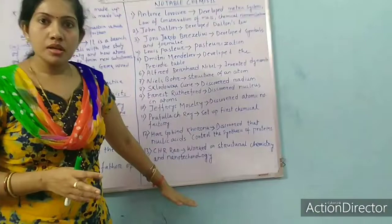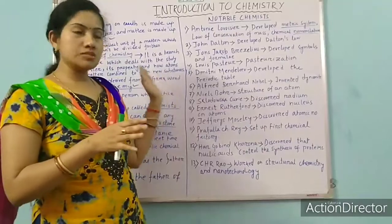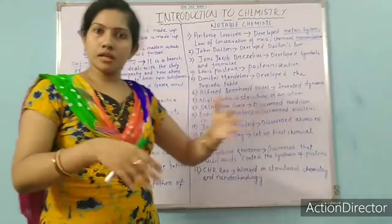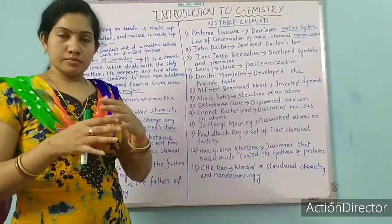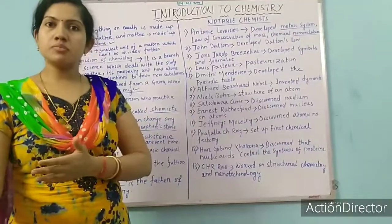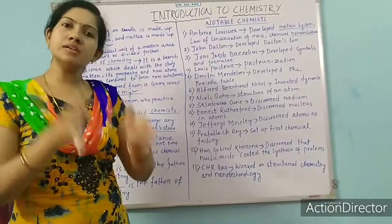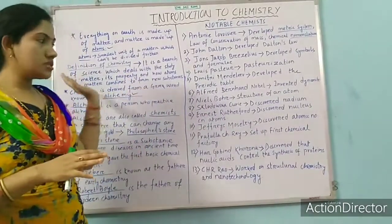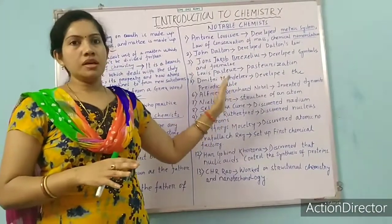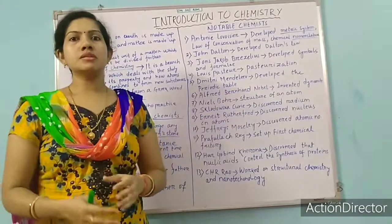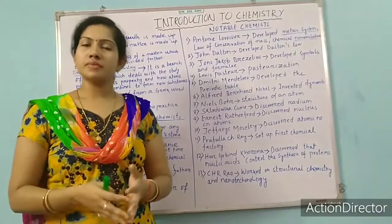These are all the notable chemists. Again, I am saying this is the first class of chemistry — don't get confused. That's why I am giving you a note, so that again and again you can go through your notes, and all these terms we will discuss later in our next chapters. Gradually you will be acquainted with these terms and find it very easy and interesting to learn. This is the introductory part. Next, we will discuss some other things about chemistry — some applications of chemistry in our day-to-day life. Thank you.